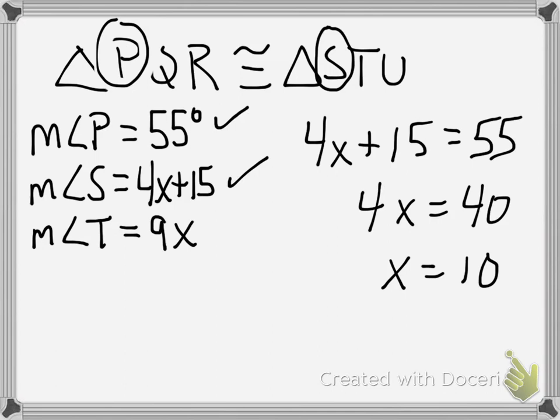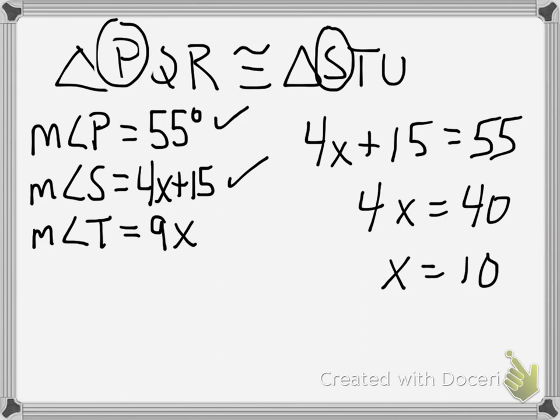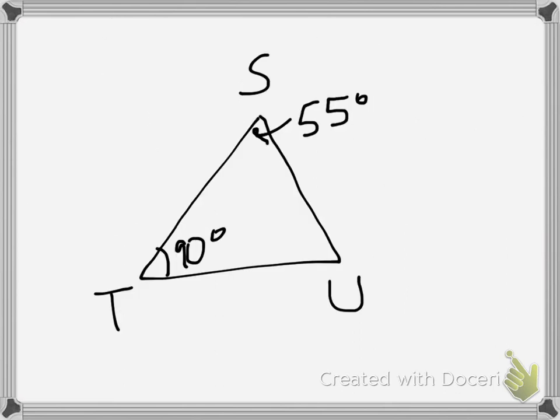Angle T is 9x, which is 9 times 10. So even though my picture is not to scale, angle T is 90 degrees. And if you go back and look, I don't have anything for angle U. So I need to be able to figure out what angle U is on my own.